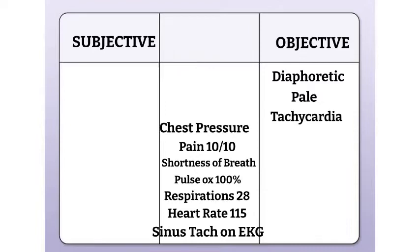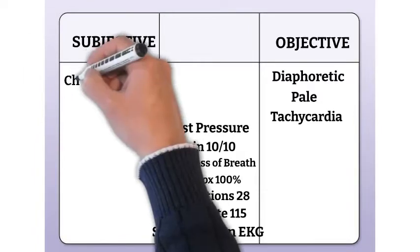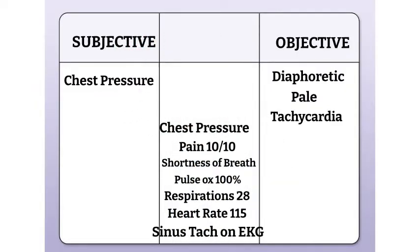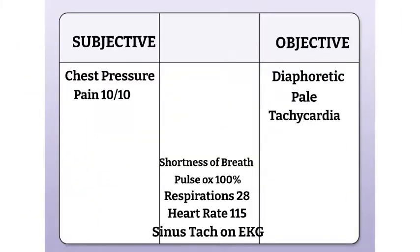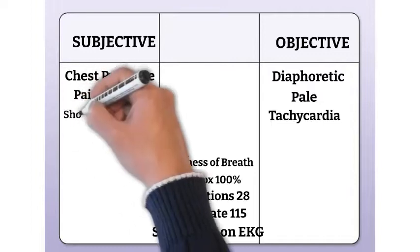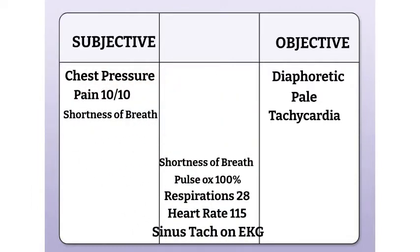The next piece of data is chest pressure. I can't see the patient's chest pressure, I can't measure it — the patient has to report it. Therefore, it's subjective. The same goes with the pain, 10 out of 10. I can't decide how much pain the patient is in; only the patient can report it. That's another one that goes under subjective. The next piece of data is shortness of breath. This one can be a little confusing, but the patient is reporting that they feel short of breath — they feel like they can't catch their breath. It's not something that we can see or measure; it's reported by the patient. Therefore, it's subjective.